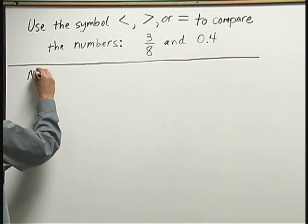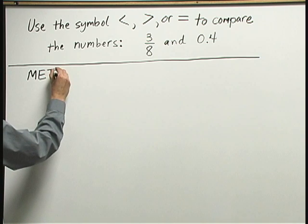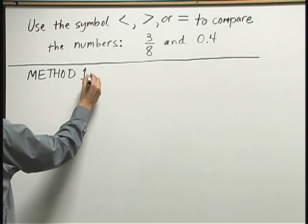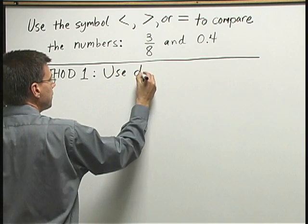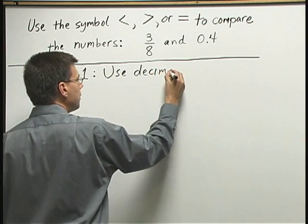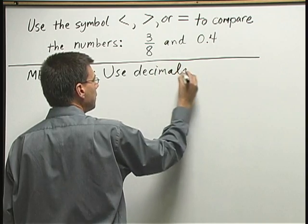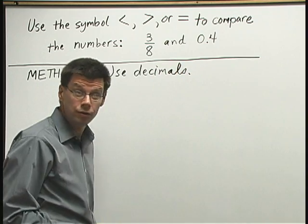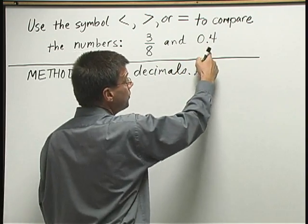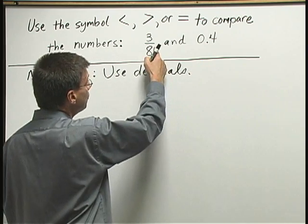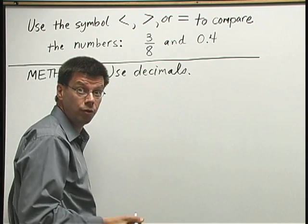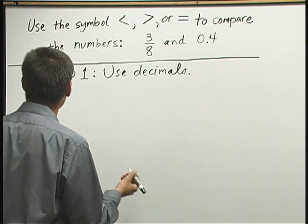For method one, let's use decimals. Now, to use decimals here, 0.4 already is a decimal. What we need to do is we need to convert 3 eighths to decimal form.